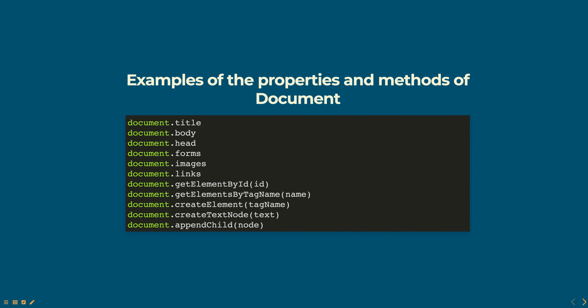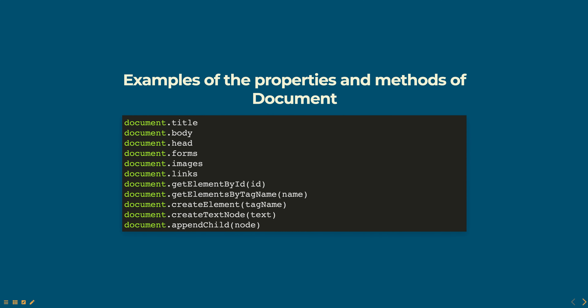Here are some examples of the properties and methods provided by the document object. Document.title gets or sets the title of the web page. Document.body gets the body element of the web page. Document.head gets the head element of the web page. Document.forms gets a collection of all form elements. Document.images gets a collection of all image elements. Document.links gets a collection of all anchor elements in the web page.